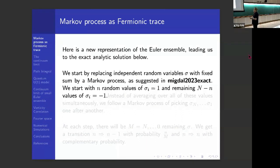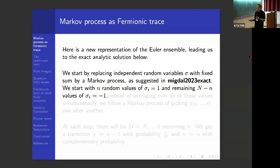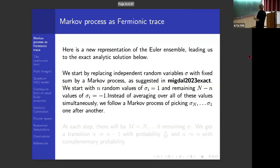So one new representation of the model is called Euler Ensemble. And there is another representation of that ensemble, which allows you to go further and solve it in continuum limit. We'll start by replacing independent random variables sigma, which are plus minus one, Ising variables, with fixed sum, variables with fixed sum by Markov process, as suggested in my previous work. So there is n random values of sigma equal one, and remaining N capital minus n values of sigma minus one. So instead of averaging over all these values simultaneously, we follow a Markov process of picking sigma N, and so on, sigma one, one after another.